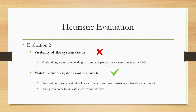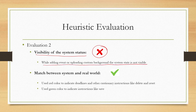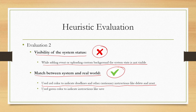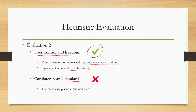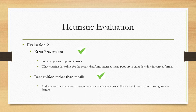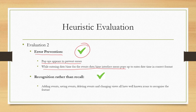Evaluator 2 also found that visibility of system status is not supported - while adding an event or uploading a custom background the system state is not visible. Match between system and real world is supported - red colour for deadlines and cautionary instructions, green for save. User control and freedom is supported - when delete is selected a prompt pops up to undo it, and once an event is created it can be edited. Consistency and standards is not supported - the menus are placed in odd positions. Error prevention is supported - pop-ups appear to prevent errors, and the deadline time interface menu pops up to enter time in the correct format.